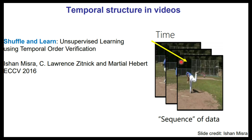Besides images, there is also unsupervised representation learning applied to video. One such proxy task is Shuffle and Learn, where the network is tasked to identify the correct temporal order of video frames.